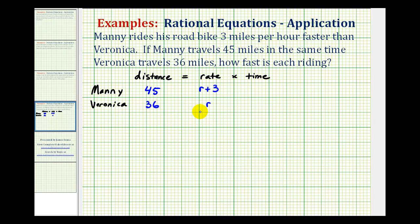Now let's go back to that statement one more time. It says that Manny travels 45 miles in the same time that Veronica travels 36 miles. So we don't know how long they're riding, but we do know that these two times are the same, which means if we put a t in here for Manny's time, we can also put a t in here for Veronica's time.